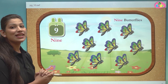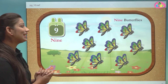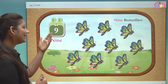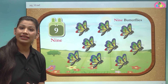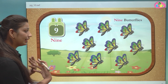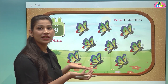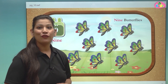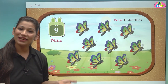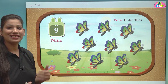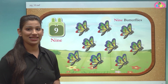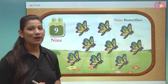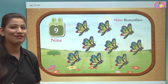Here students we can see number 9. This is number 9 and here we have a garden full of butterflies. Here we can see butterflies. Let us count the number of butterflies.